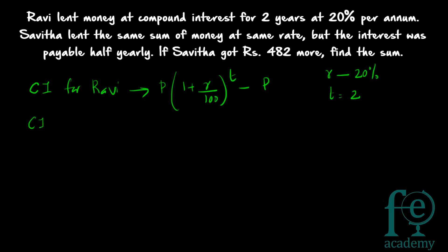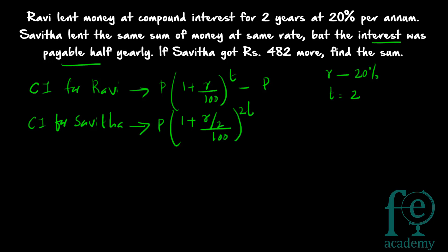Now, what will be the compound interest for Savitha? In Savitha's case, the interest was payable half yearly, so there is a change in the formula. The amount will be equal to P × (1 + (R/2)/100)^(2T) − P. This is the formula when the interest is payable half yearly or compounded half yearly. The question can be asked in two ways: the interest is payable half yearly, or compounded half yearly.